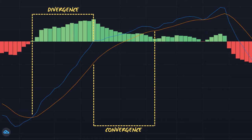The MACD is considered by some both a leading and lagging indicator. The MACD line and signal line are lagging indicators, as they only provide trading signals once they have crossed each other and the trend is already in motion. The histogram, on the other hand, can be considered a leading indicator, as it can sometimes be used to anticipate signal line crossovers.